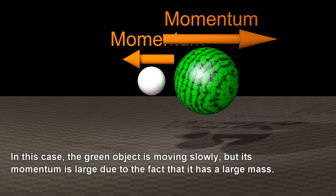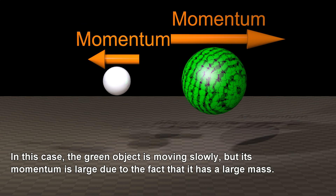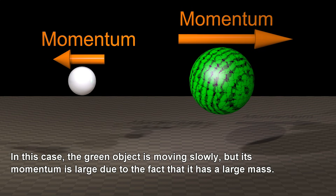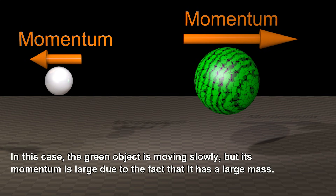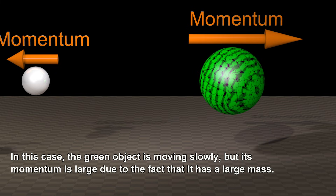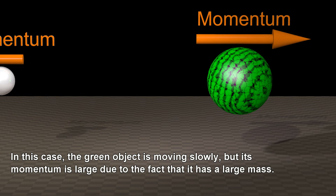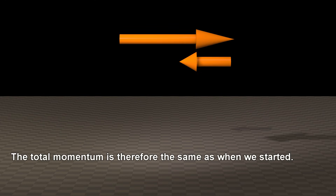In this case, the green object is moving slowly, but its momentum is large, due to the fact that it has a large mass. The total momentum is therefore the same as when we started.